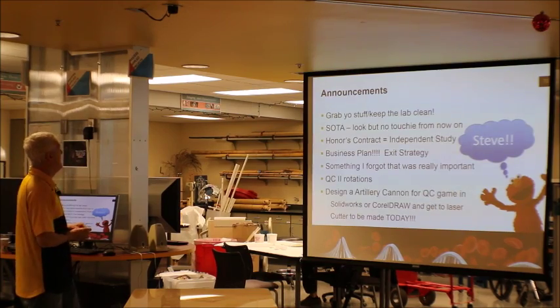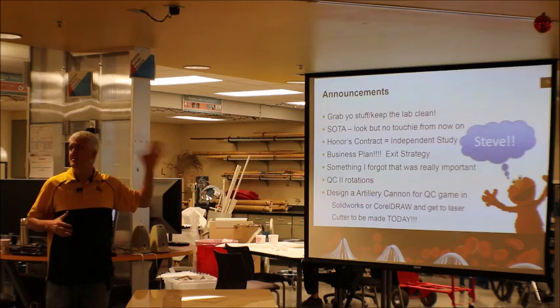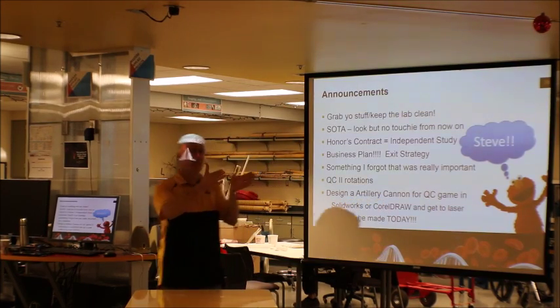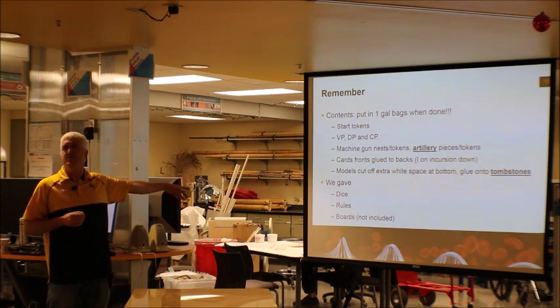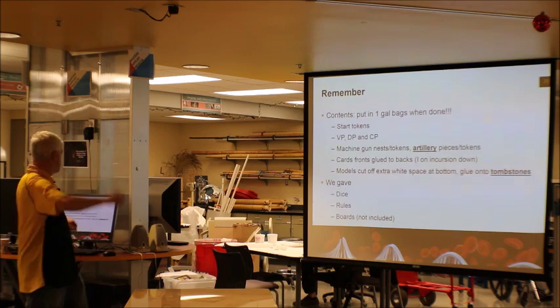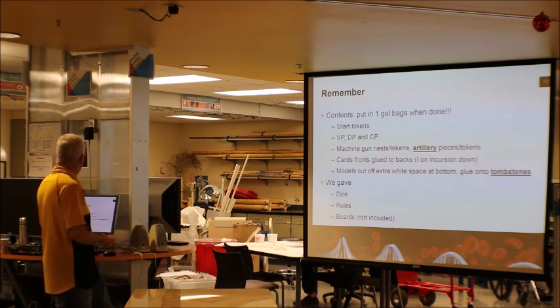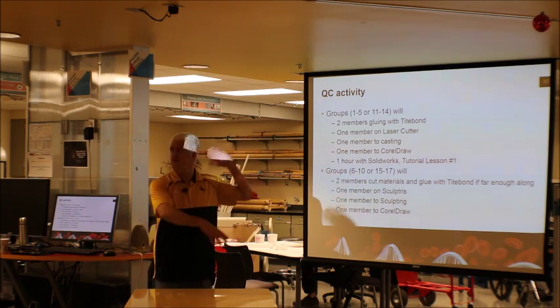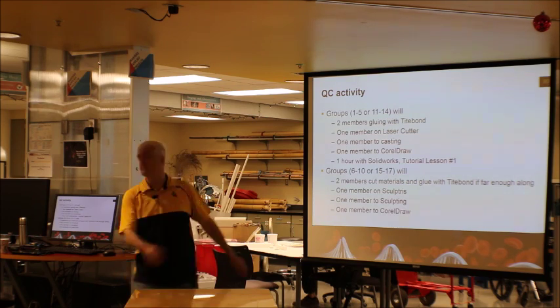We'll go a little more into business stuff in time. For the rotations today: we're doing laser cutting, casting, sculpting, molding, and mold making. One note about the artillery cannon — it's basically circles that you glue together, so if you're going to laser cut those, that's a lot of gluing. Maybe make a design of a cannon on the side and glue it up sideways. When you're done, put everything in a one-gallon bag with all the contents we gave you. Also the tombstones — don't forget those, we're going to be laser cutting them a lot. And make sure you cut off the white part of the bottle; it's a lot easier to deal with things that way.